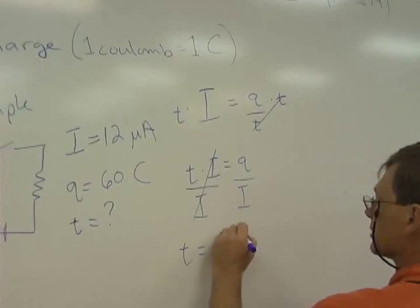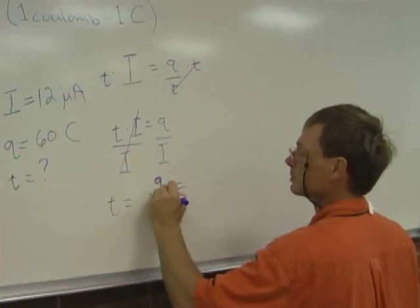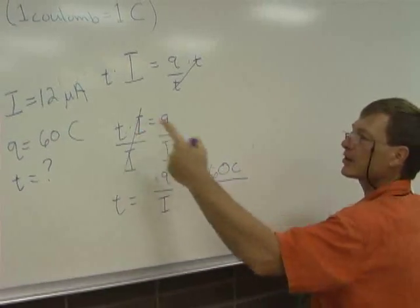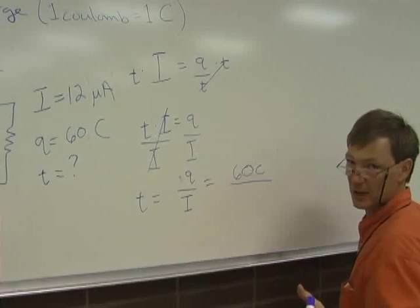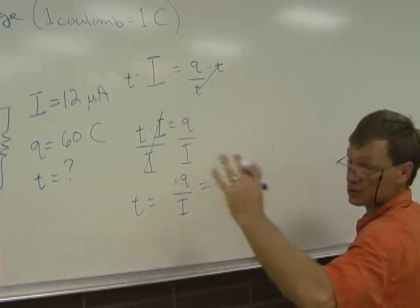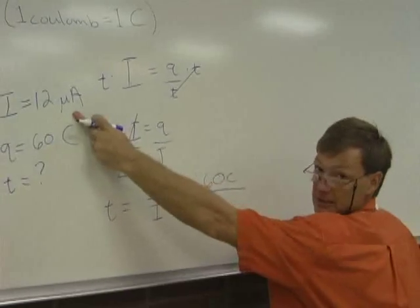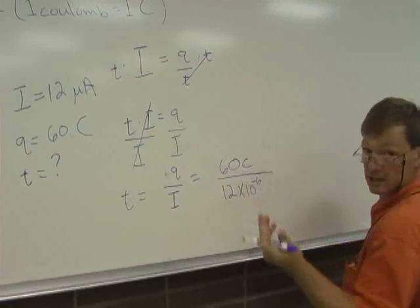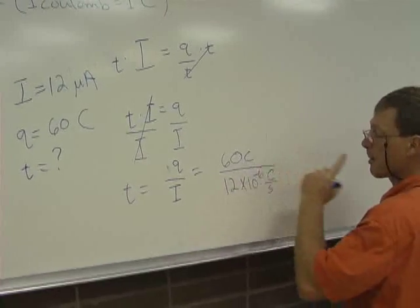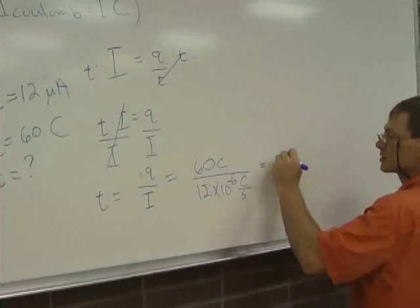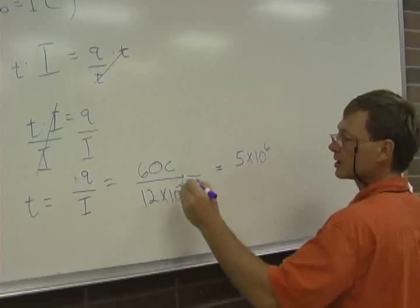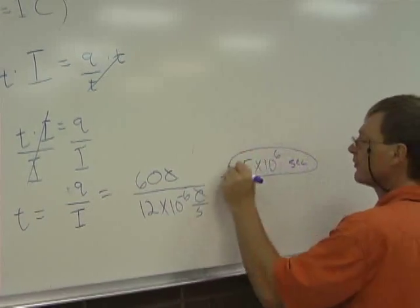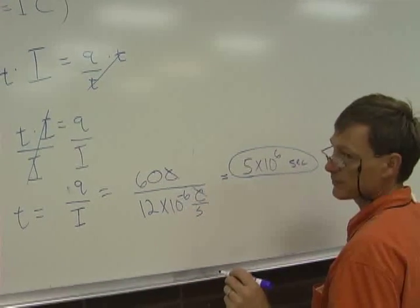And I've got the charge of 60 coulombs. Now I've got 12 microamps. I could convert that into 1.2 times 10 to the minus 5 amps. And you can do that. There are a million microamps in an amp. So you can use a conversion. Or I can just say 12. A micro means times 10 to the minus 6. So I'll say 12 times 10 to the minus 6 amps. And again, since I'm canceling units instead of amps, I'm going to write coulombs per second. What I'm going to get, the numbers turn out to be 5 times 10 to the 6. That's 5 million. Now the coulombs cancel. I've got 1 over 1 over seconds. And that turns into seconds. It would take 5 million seconds for 60 coulombs to pass through.